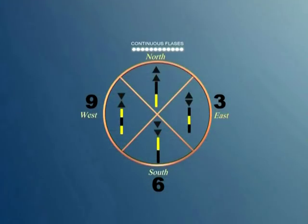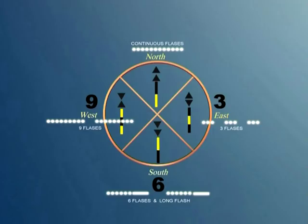If lit at night, the north marker exhibits a continuous flashing light. Similar to the numbers on a clock face, the east marker flashes in groups of three flashes. The south marker in groups of six flashes followed by one long flash, and the west in groups of nine flashes.